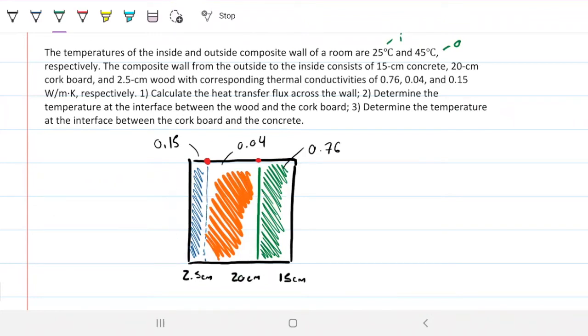So therefore, if the concrete is on the outside, I'm going to already go ahead and do, okay, this is outside over here, and outside I wrote down that's 45, so this is 45 Celsius, which means by elimination this is inside, and therefore this is the 25 degrees Celsius. With the corresponding thermal conductivities given as 0.676, 0.04, and 0.15.